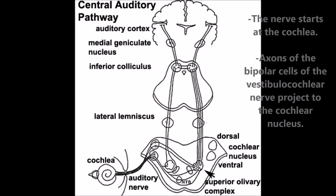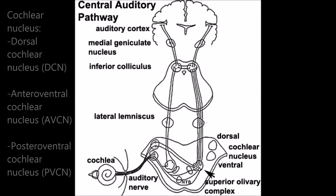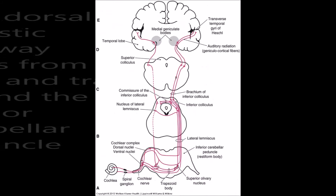The nerve starts at the cochlea. The axons of the bipolar cells of the vestibular cochlear nerve project to the cochlear nucleus. The cochlear nucleus is divided into the dorsal cochlear nucleus (DCN), anteroventral cochlear nucleus (AVCN), and posteroventral cochlear nucleus (PVCN) of the pons.